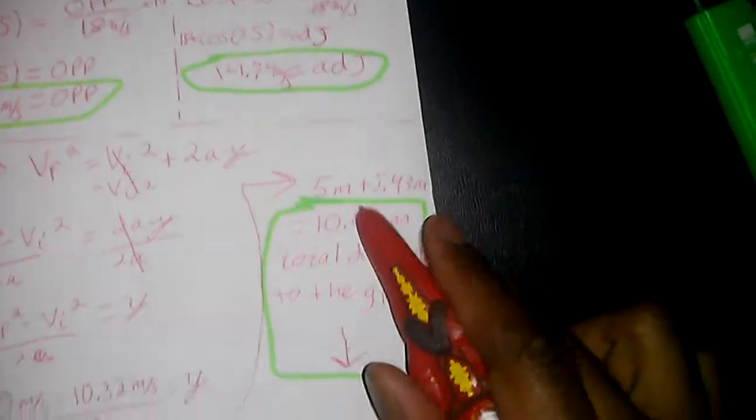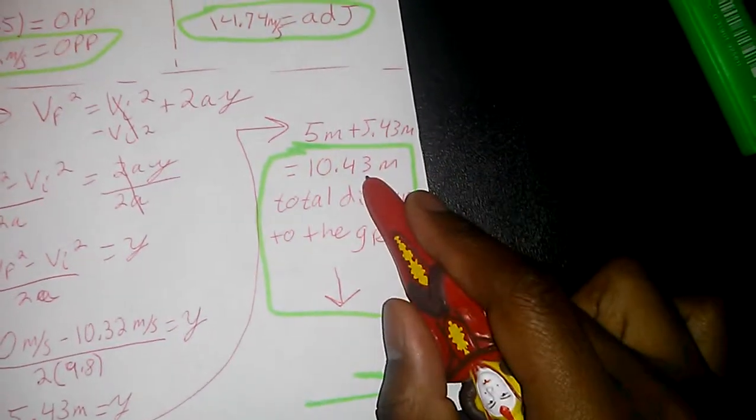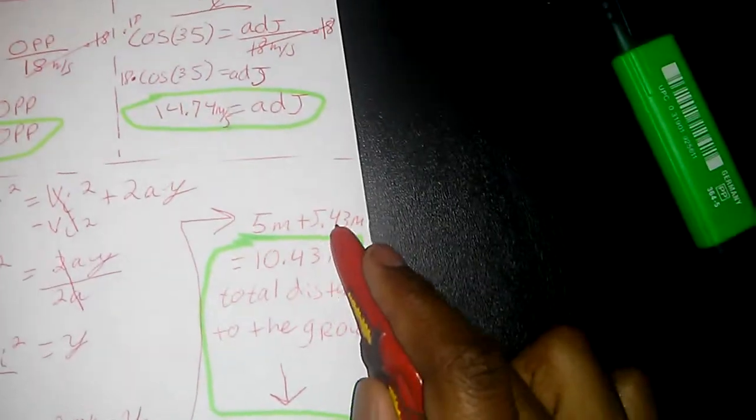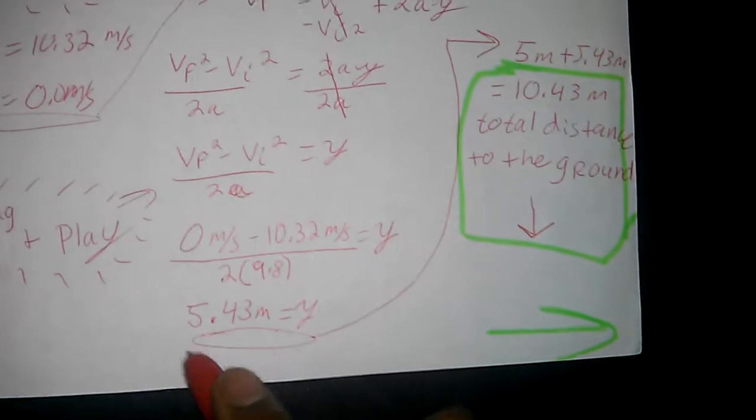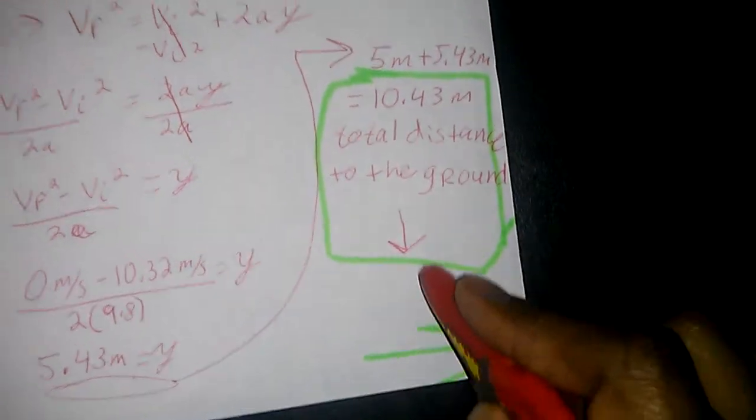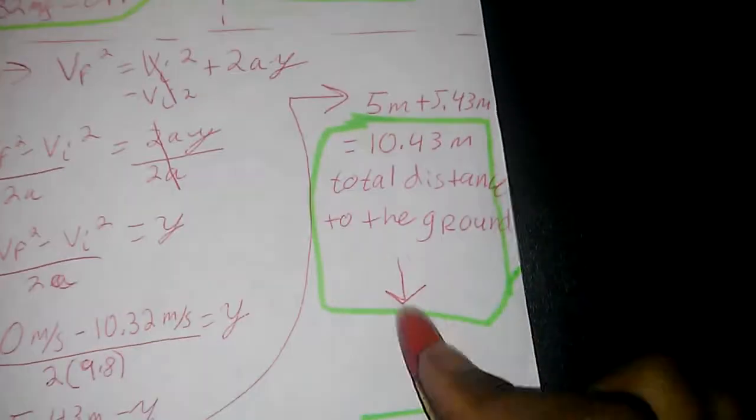So you get that. Go right up here. Follow the magical red line. And you add the 5 meters to the 5.43 meters. And now you got 10.43 meters total distance to the ground.